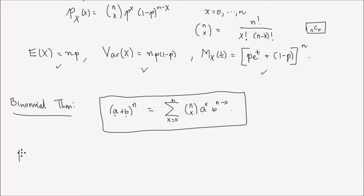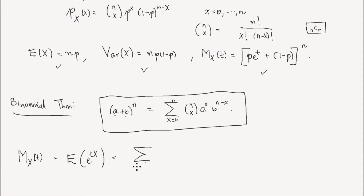First, let's find the moment generating function of the random variable x. Note that this is just one way to prove the expectation, the variance, and the MGF — there is a much easier way. By definition, the MGF of x is the expected value of e to the power of t times x. That equals the sum from x equals 0 to n of e to the power of tx times the PMF, which is n choose x times p to the power of x times 1 minus p to the power of n minus x.